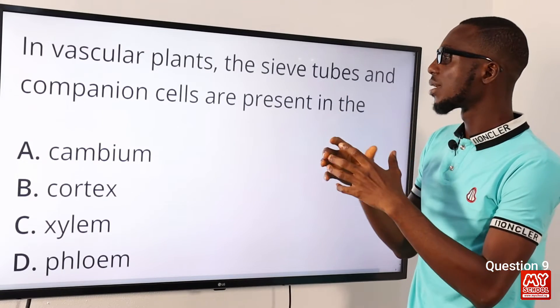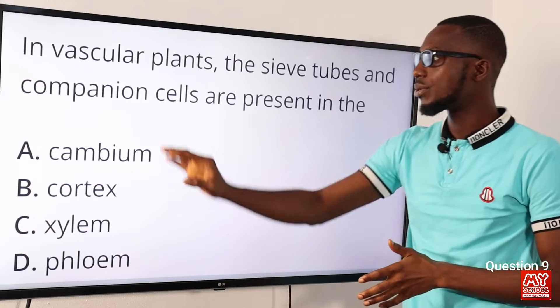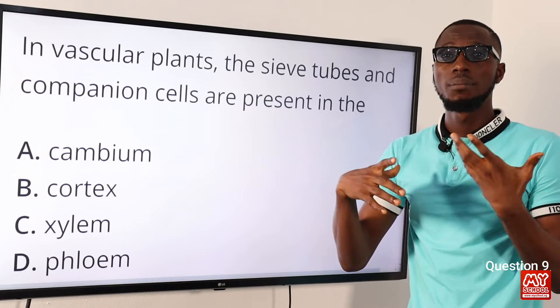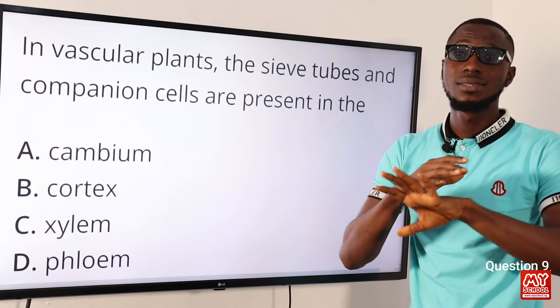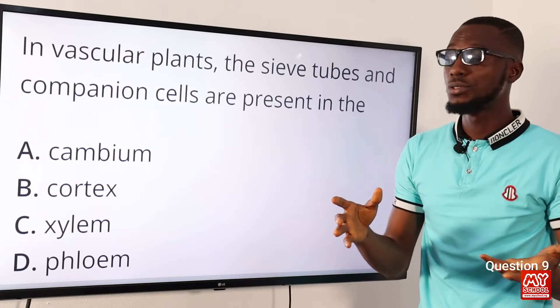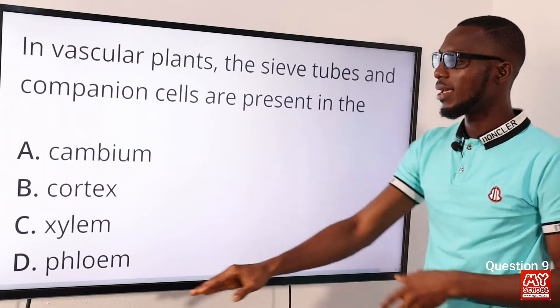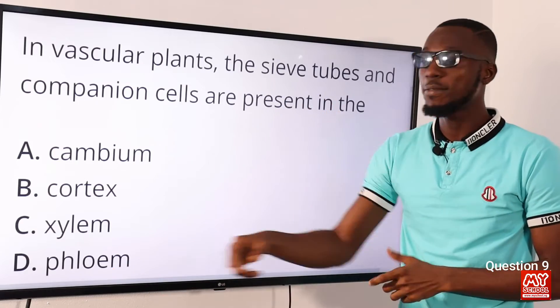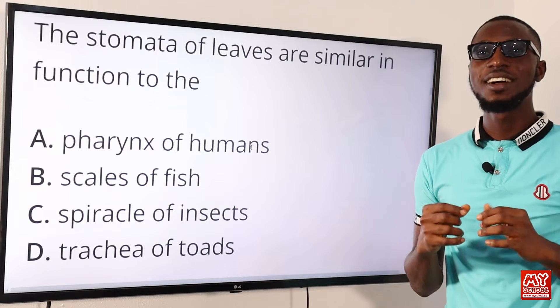Question nine: in vascular plants, the sieve tubes and companion cells are present where? Their function involves the loading or unloading of sugars — that is, the transport of sugars. You can find these in the phloem. So the correct option is option D for phloem.